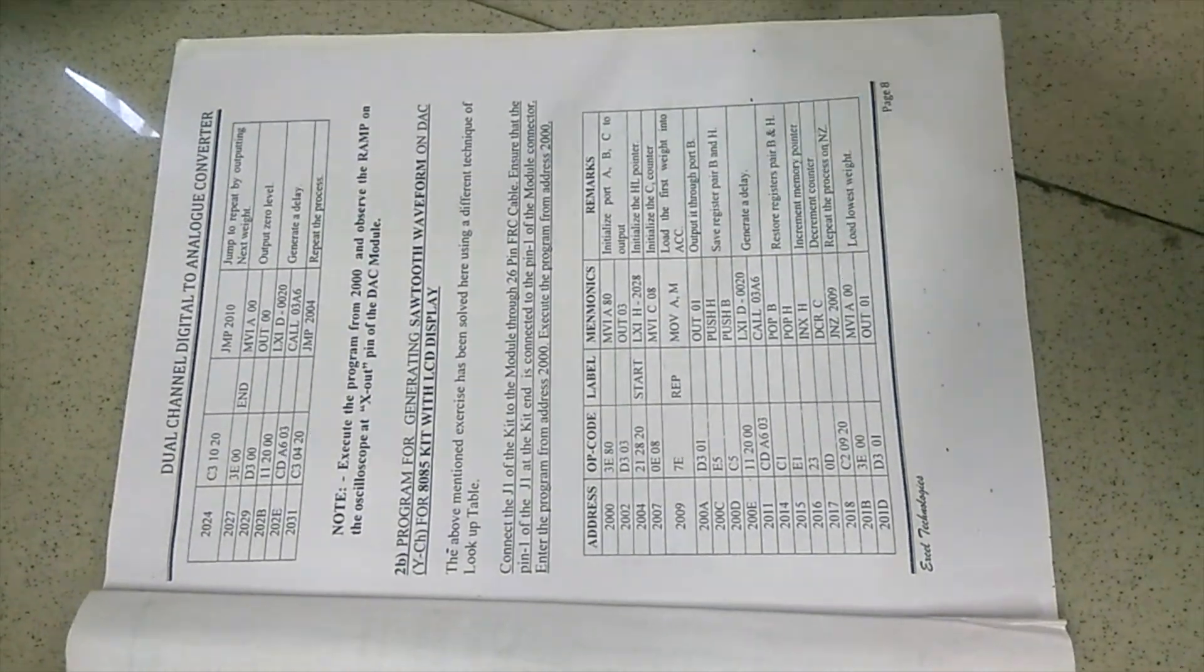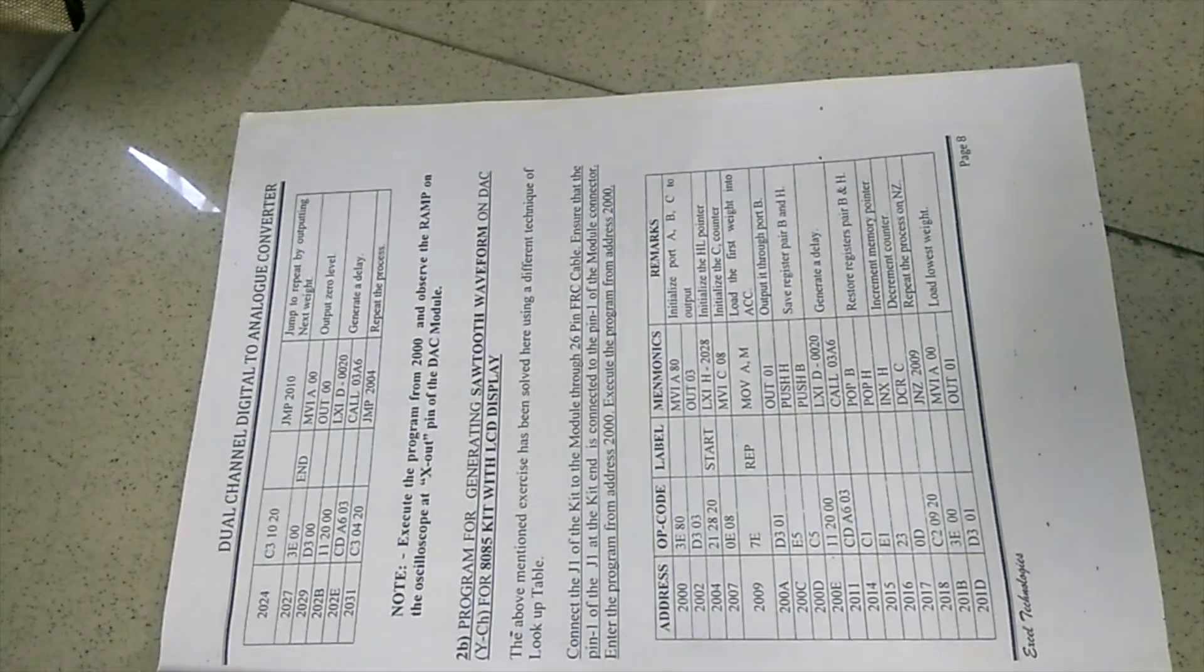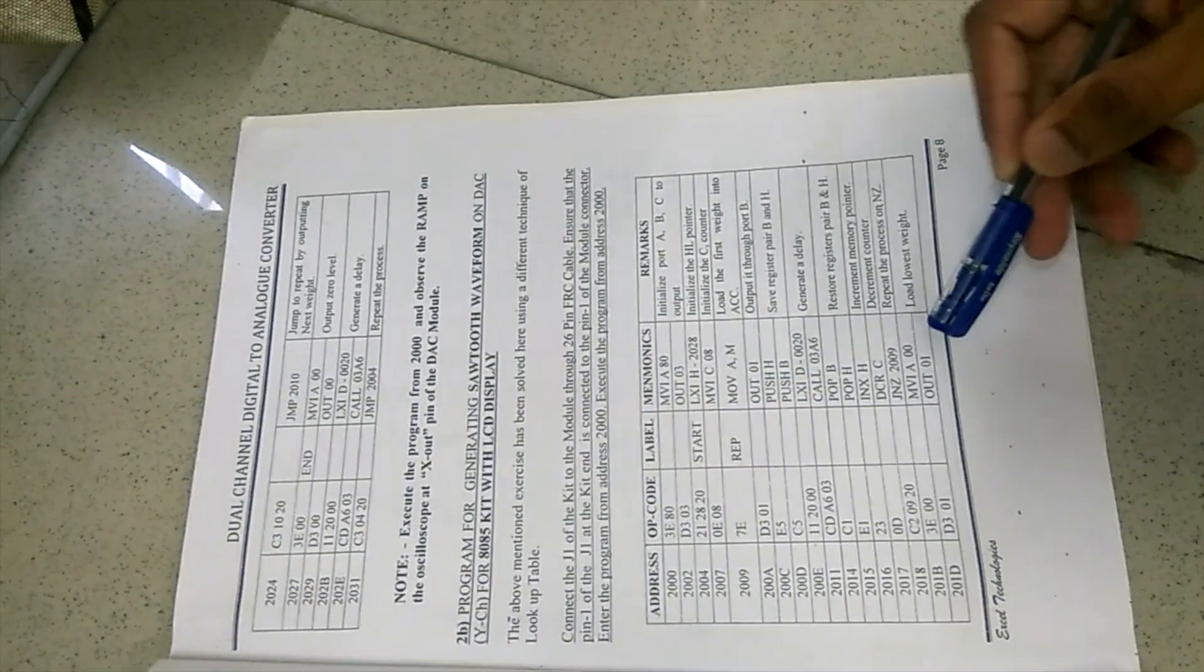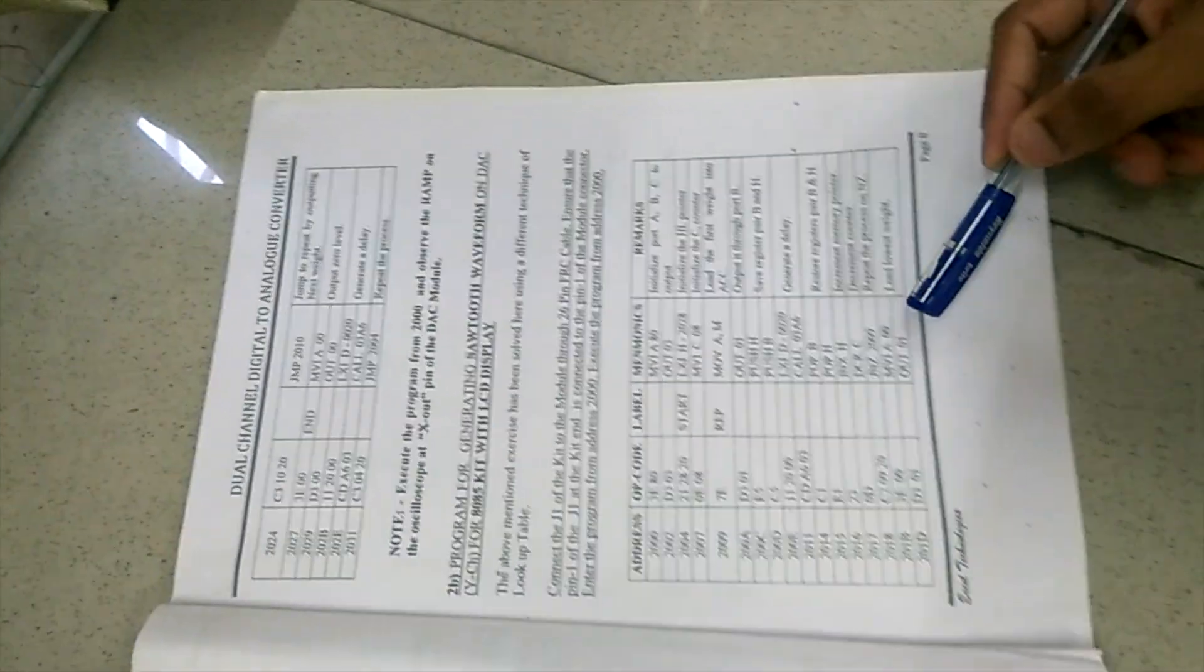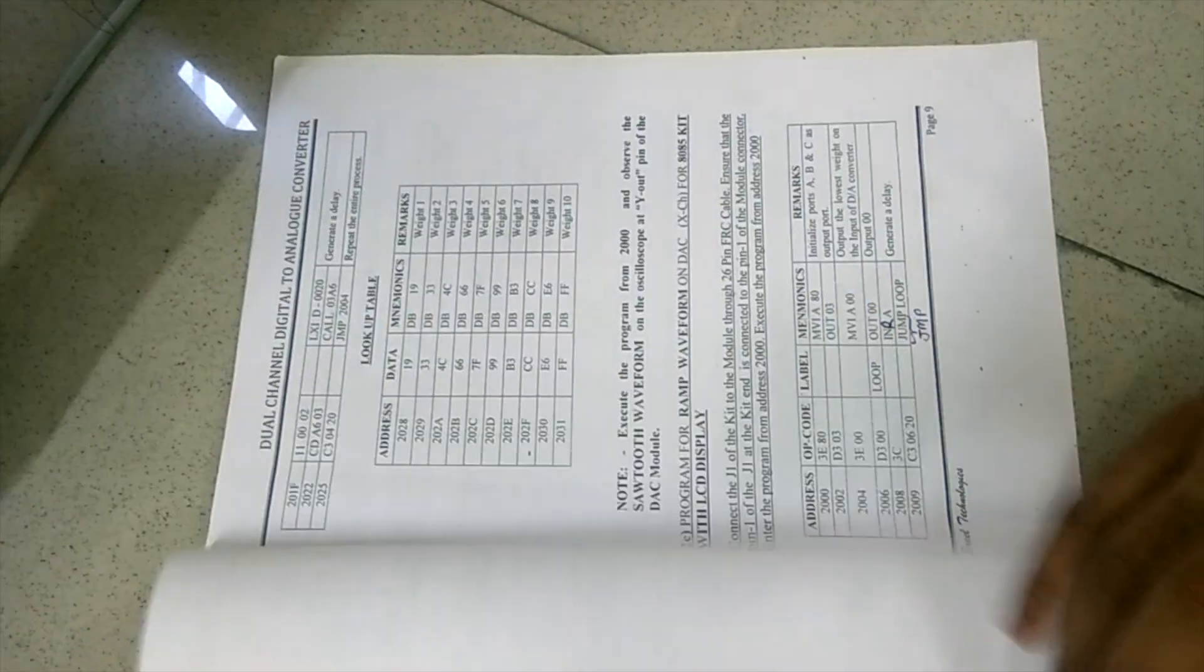Then, these lines are for decrementing the counter so that the next value can be iterated upon. In the end, we load the lowest byte and this completes the mnemonics part.